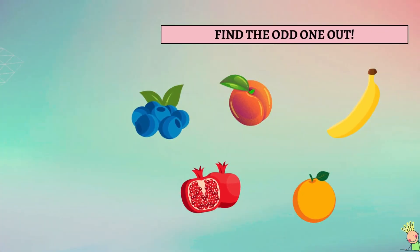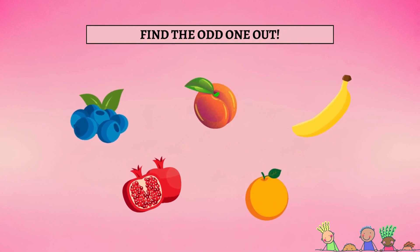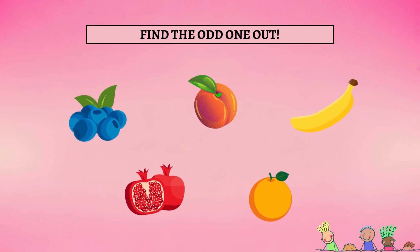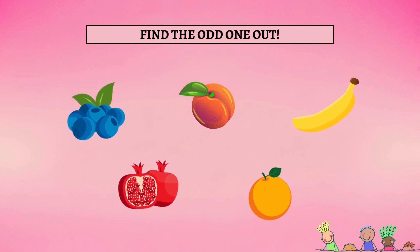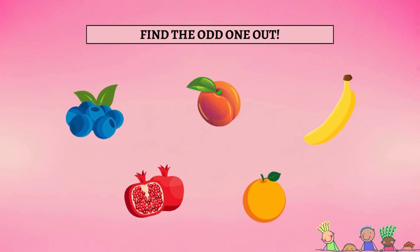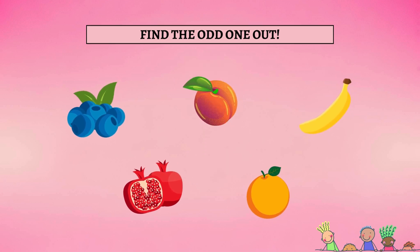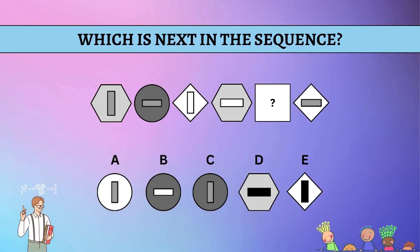Find the odd one out! This childish brain teaser may prove to be tougher than you think. Do you know which one doesn't belong? It's the banana. It's the only fruit that is not round. Cool! If you thought that was too easy, here's a little challenge for your brain. Looking at the shapes below, can you figure out the pattern?